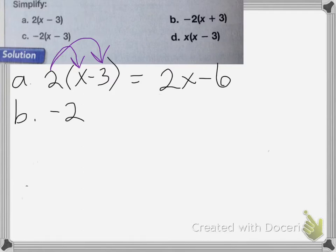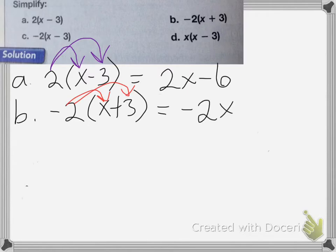On B, it's negative 2 times (x plus 3). We distribute the negative 2 to both terms, and that equals negative 2x minus 6, because negative 2 times positive 3 equals negative 6.